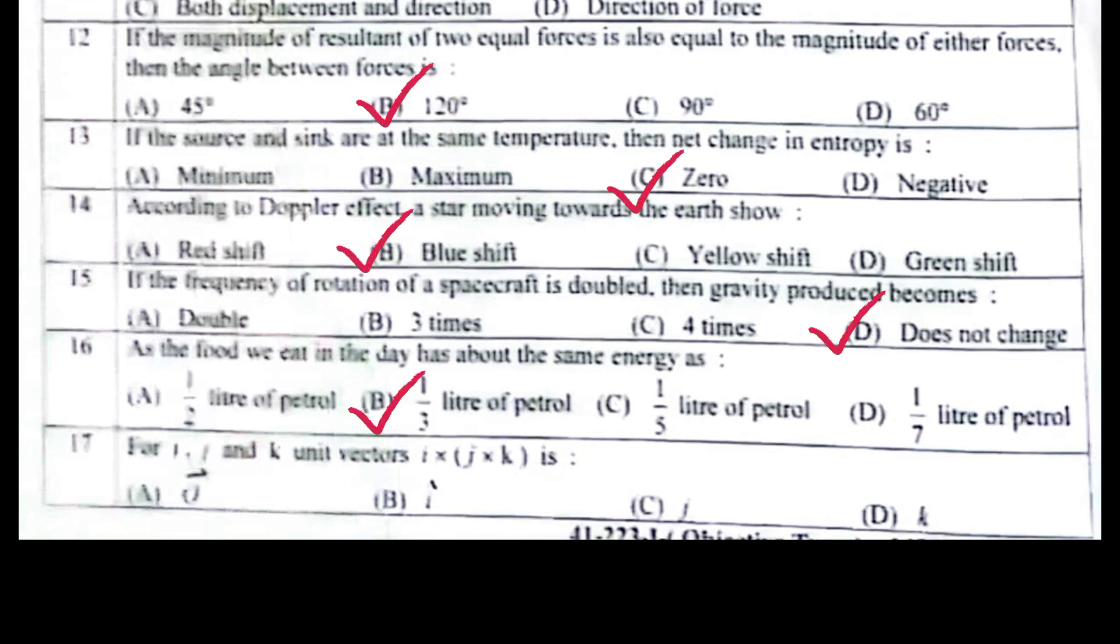For i, j, and k unit vectors, i cross j cross k is zero vector.